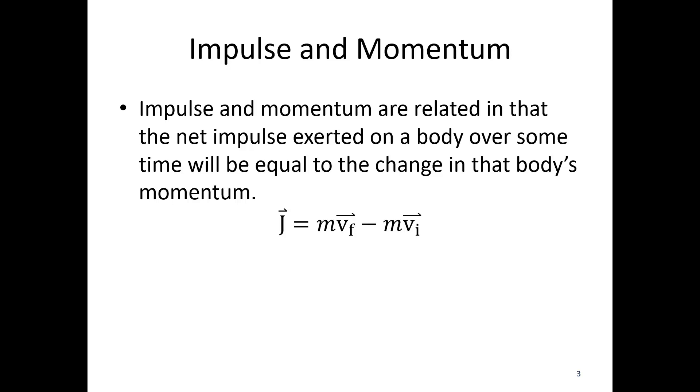In equation form, this is what this looks like. So, J, which is our impulse, is going to be equal to the change in momentum. So, momentum final minus momentum initial.